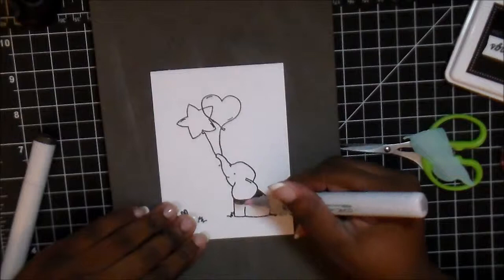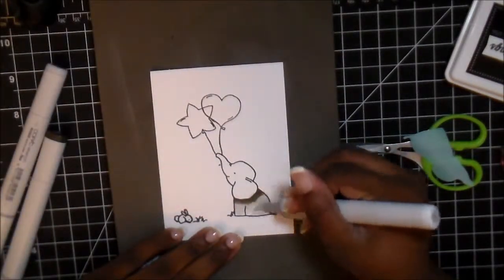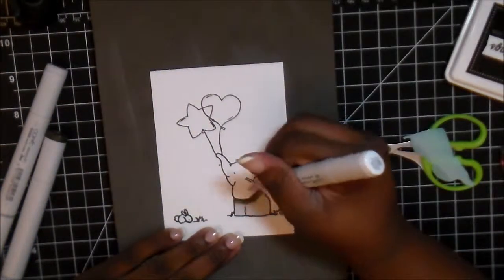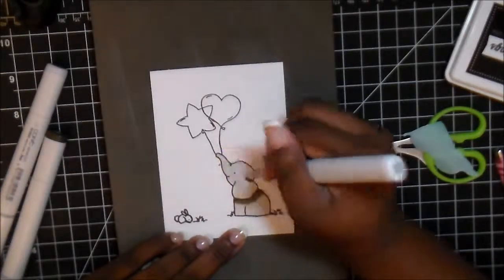Now right now I'm doing Copic coloring and with this particular Copic coloring what I was trying to do was create a shadow underneath his ear and then a little shadow on the back of the head.